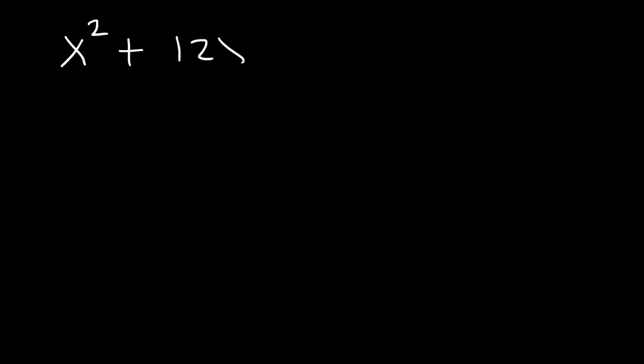In this video we're going to talk about how to solve quadratic equations by completing the square. So let's consider this example: x squared plus 12x plus 32, and let's say it's equal to zero.